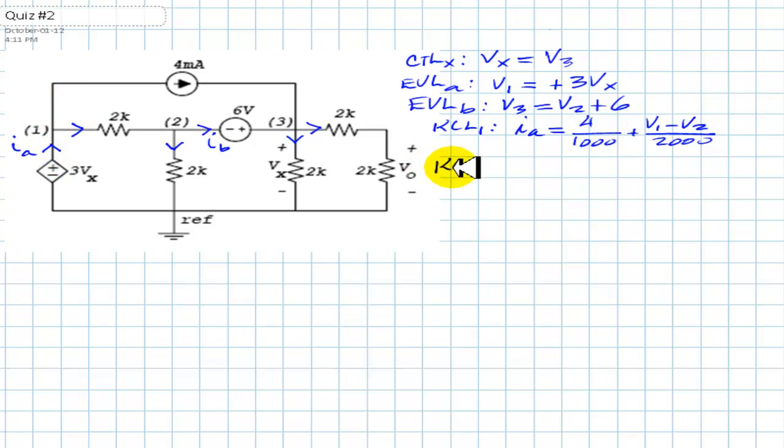KCL2 for node 2. Three elements. Current arriving only one. Origin destination resistance. V1 minus V2 over 2000. That is equal to the current in this vertical branch, V2 over 2000, plus the value of this evil current, plus IB. It's an unknown.